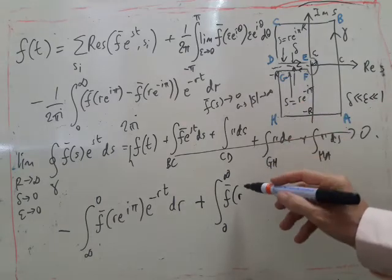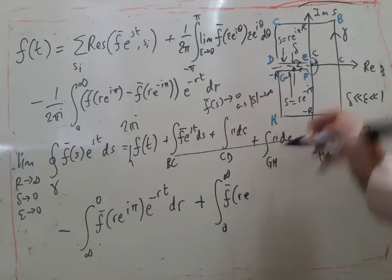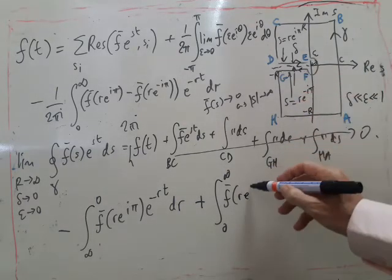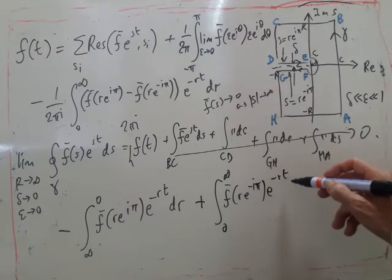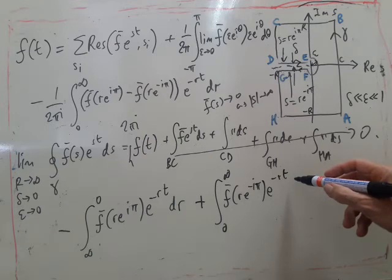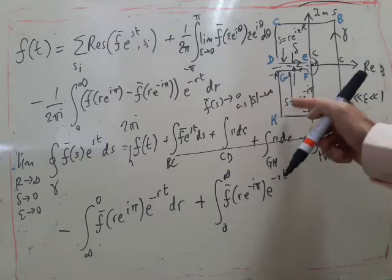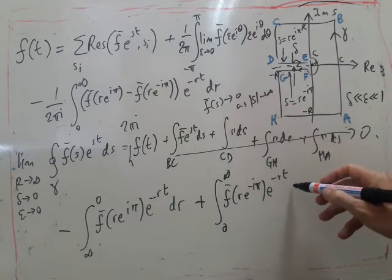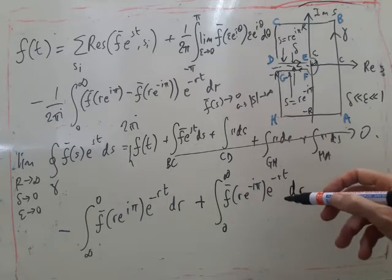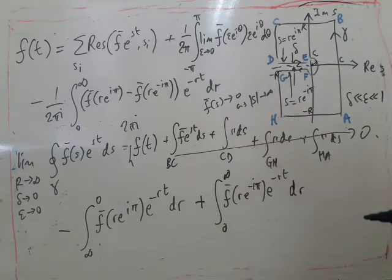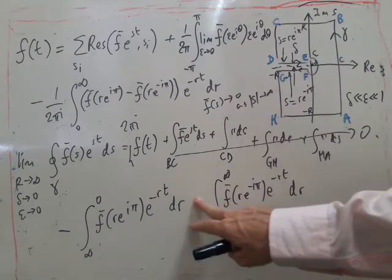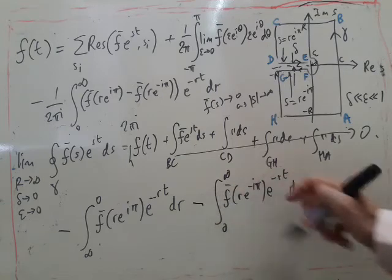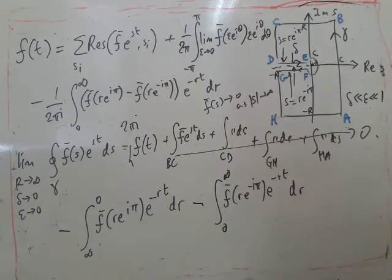And then we've got the integral from 0 to infinity. Along here, where r is, s is e to the, r times e^(-iπ) times, again, e^(-rt). And again, ds turns into minus dr. So I end up with a minus sign here, from the ds equals minus dr.